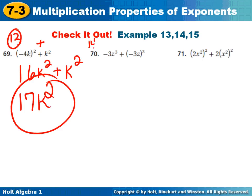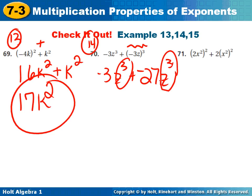Number 14. I have to cube all of this, so that's negative 3z to the 3rd plus negative 27z to the 3rd. Then I need to add the z to the 3rds together. Whoops. Negative 27 plus negative 3 is negative 30z to the 3rd. Last one.